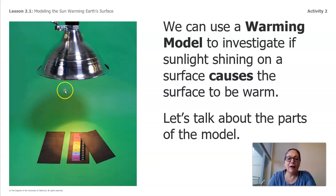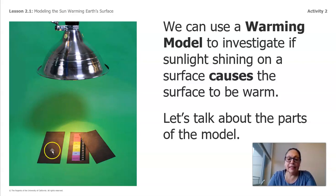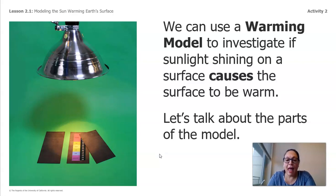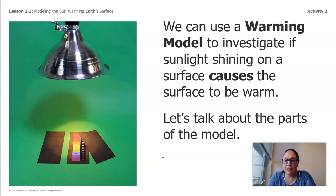Let's look at the parts of the model. Here we have a lamp with the light on, rubber surfaces, and a thermometer. When you get the lesson with Science Kate, she's going to actually use the model and you'll see how it works. Some teachers are working from home and don't have the classroom equipment, but we're going to use our imagination and I'm going to walk you through it.